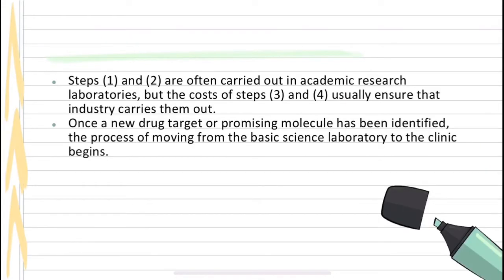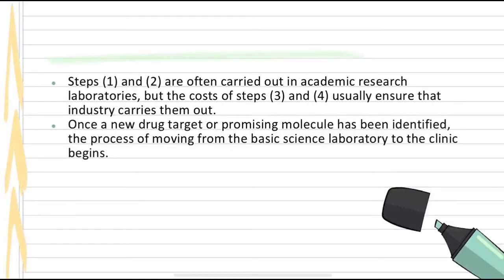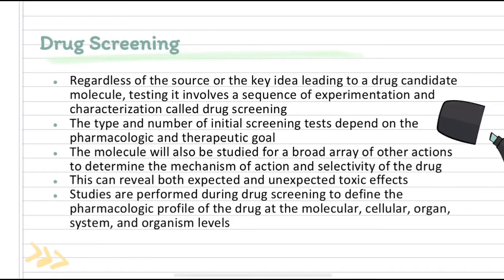Steps 1 and 2 are often carried out in academic research laboratories, but the cost of steps 3 and 4 usually ensures that industry carries them out. Once a new drug target or promising molecule has been identified, the process of moving from the basic science laboratory to the clinic begins. Regardless of the source or the key idea leading to a drug candidate molecule, testing it involves a sequence of experimentation and characterization called drug screening.